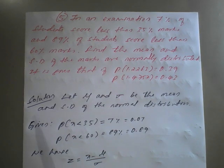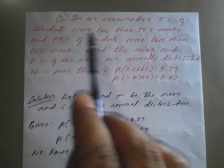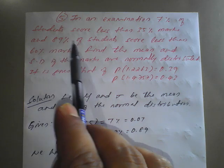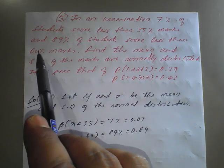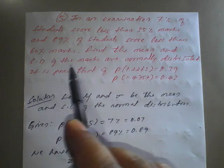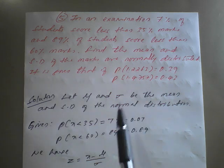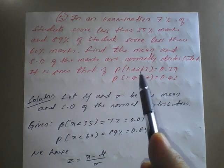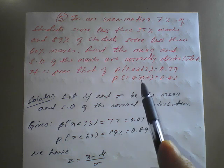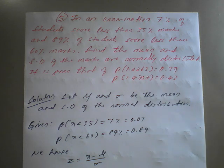Next question: In an examination, 7 percent of students score less than 35 marks and 89 percent of students score less than 60 marks. Find the mean and standard deviation of the marks, which are normally distributed. It is given that φ(1.2263) = 0.39 and φ(1.4757) = 0.43.